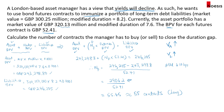If yields drop by 10 basis points, the asset BPV of £243,000 tells us the asset value will increase by about £2.43 million. However, the liability value will increase by about £2.46 million. This means the liability value increased more than the asset value, resulting in a drop in the equity value of the fund — a negative impact of approximately £0.03 million. This is why we use futures contracts to increase the BPV and negate this negative impact on the fund's equity.